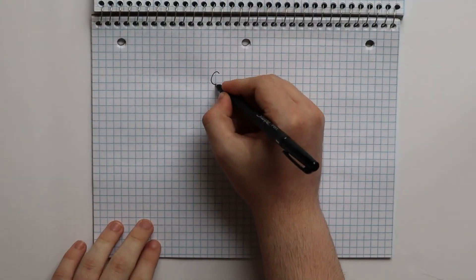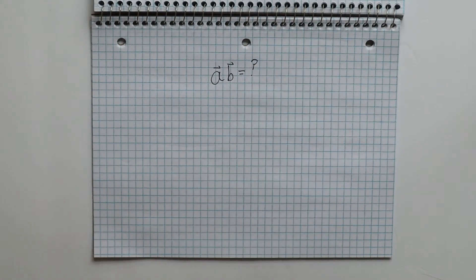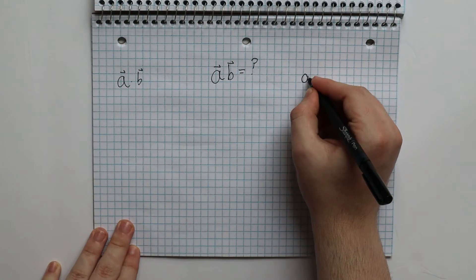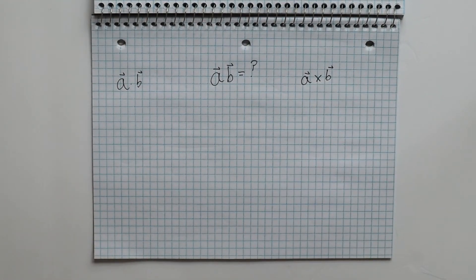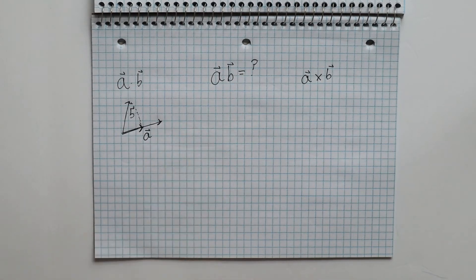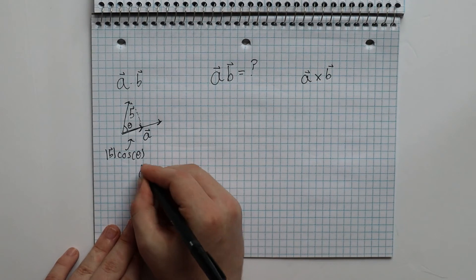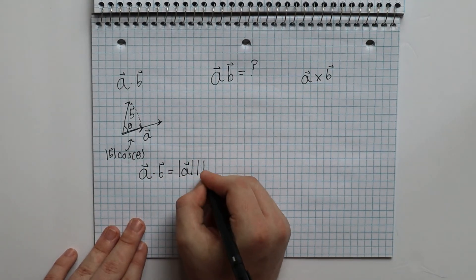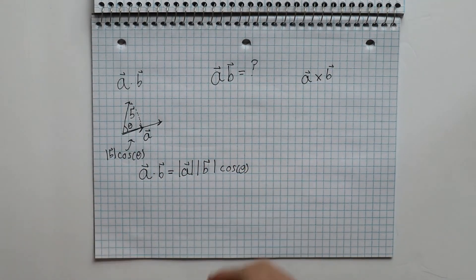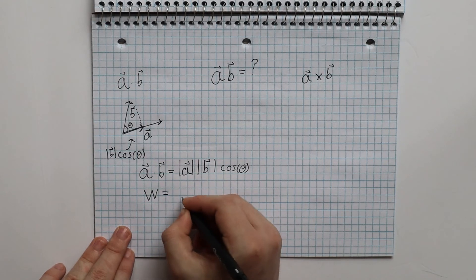To answer this question, we must first look at how you multiply vectors, since both of these formulas are multiplying vectors together. If you look it up, you get two different answers: the dot product and the cross product. The dot product is a measure of how much two vectors are pointing in the same direction, and the result is a scalar. The formula for the dot product of two vectors a and b is the magnitude of a times the magnitude of b times the cosine of theta — which is the same formula as work. So we can rewrite our formula for work as: work equals force dotted with displacement.